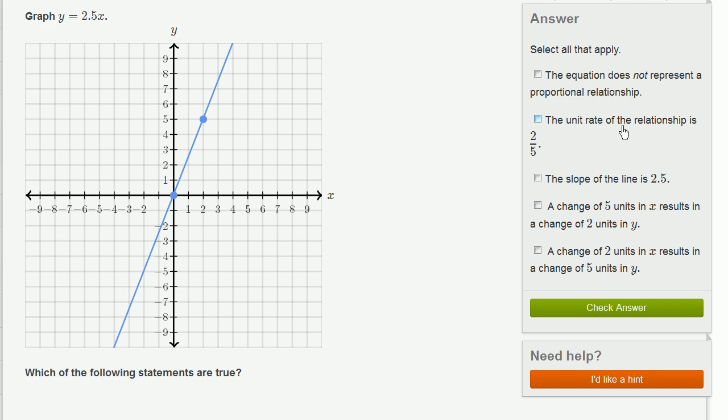The unit rate of the relationship is 2 fifths. So I'm assuming this is a little ambiguous the way they stated it. I'm assuming they're saying the unit rate of change of y with respect to x. And the unit rate of change of y with respect to x is when x increases 1, y changes 2.5. So here they're saying when x changes by 1, y changes by 0.4. 2 fifths is the same thing as 0.4. This should be 5 halves. 5 halves would be 2.5. So this isn't right as well.